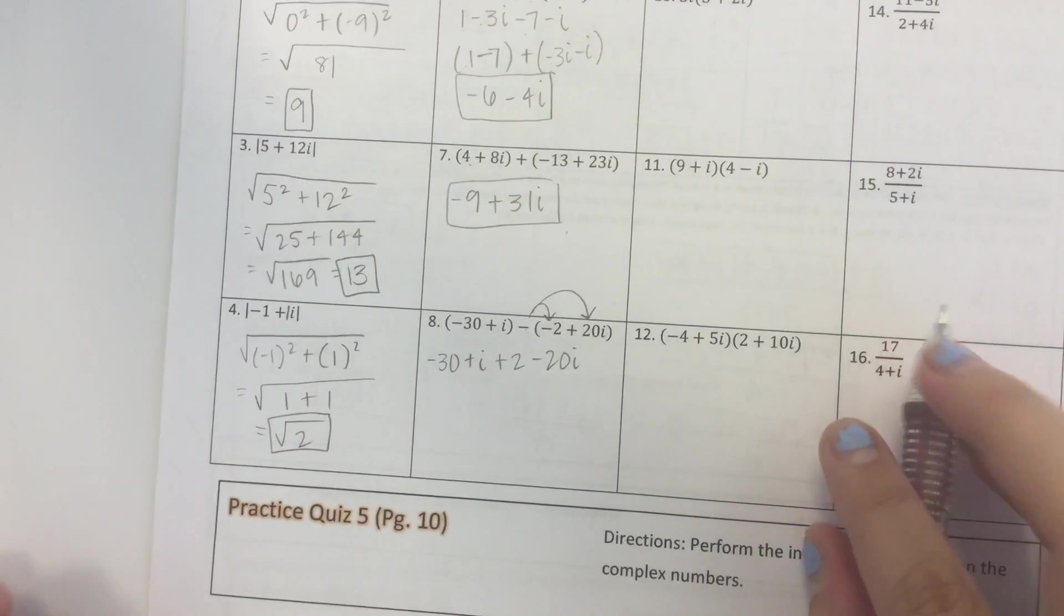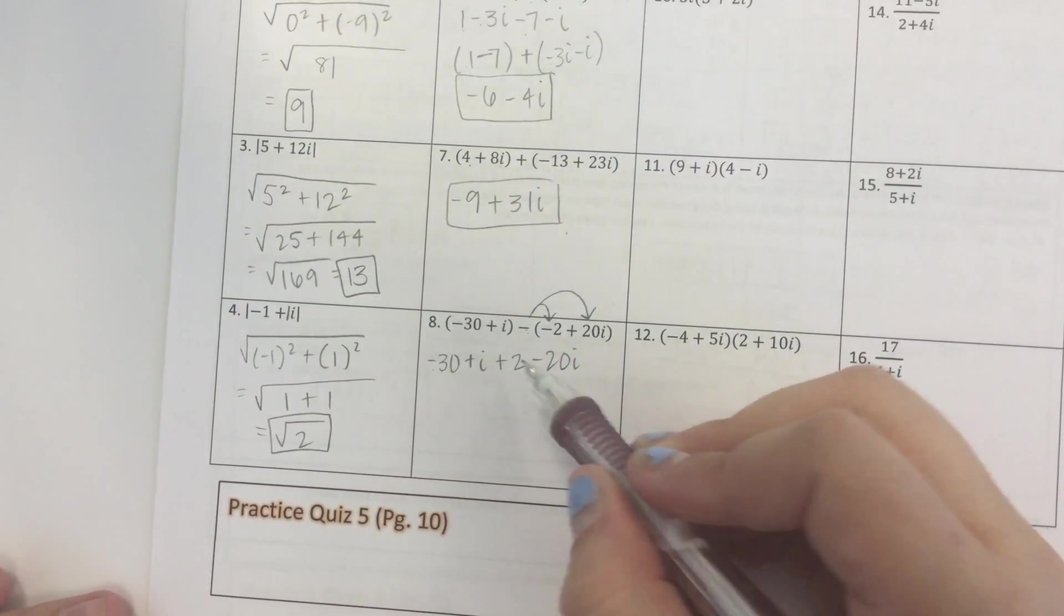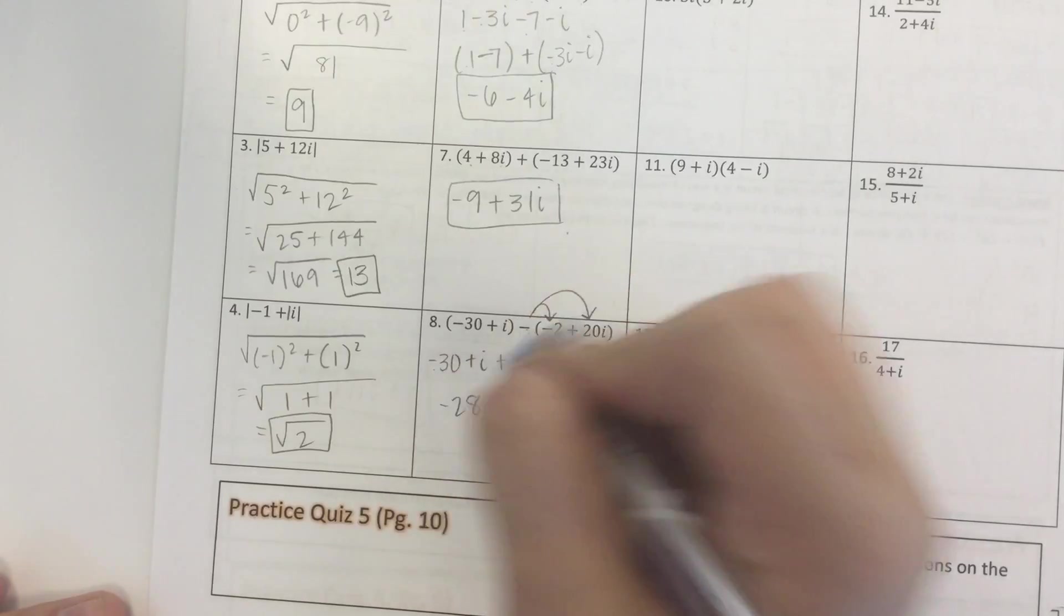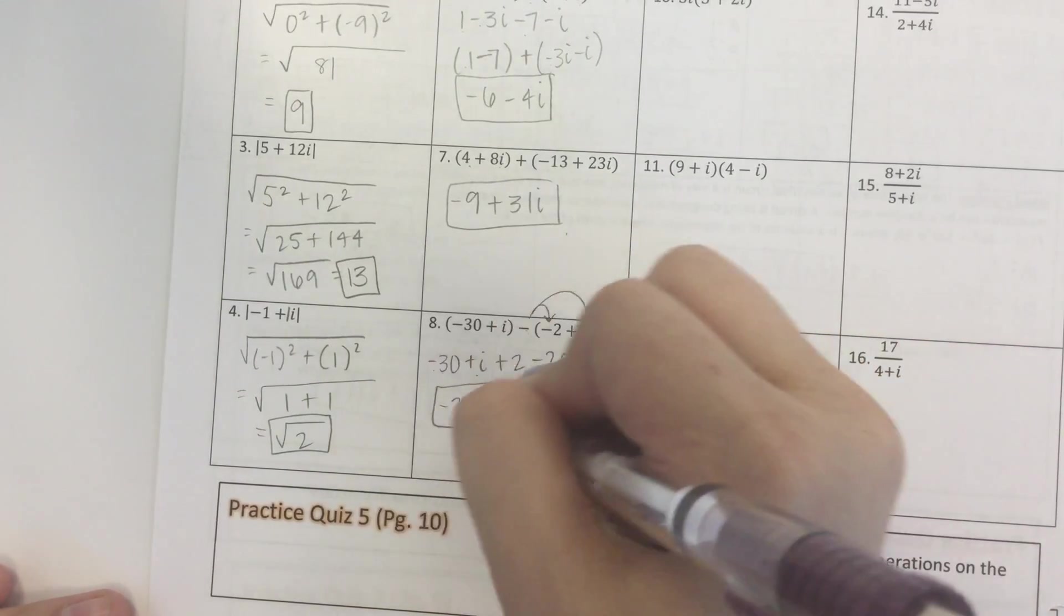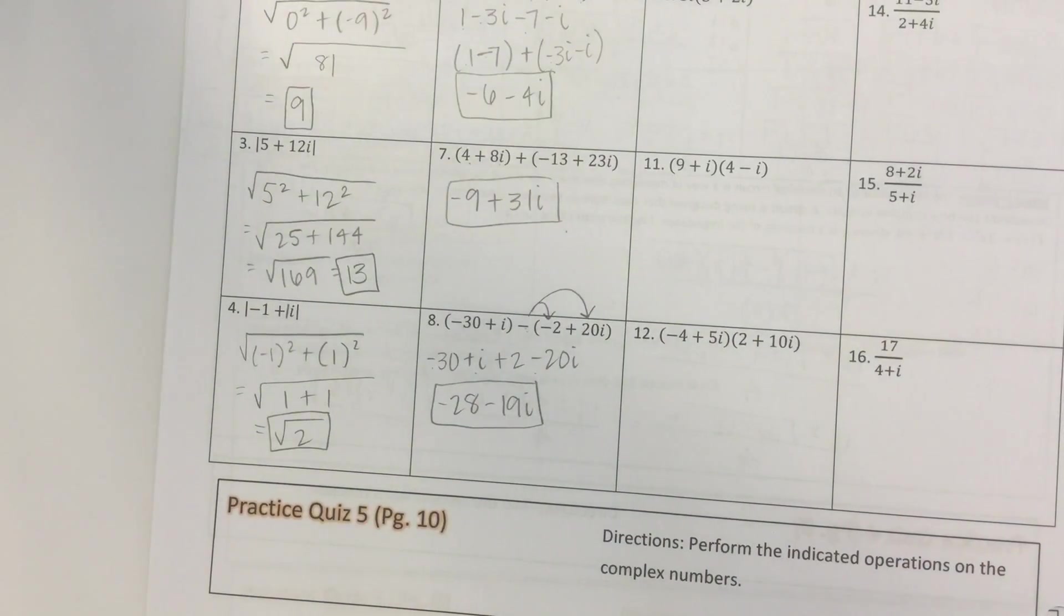Now I can combine like terms. Negative 30 plus 2 is negative 28. i minus 20i is negative 19i. And we're done.